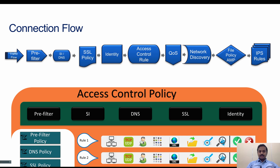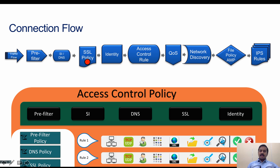If the traffic successfully crosses the security intelligence and DNS components, it moves on to the SSL policy. If the traffic matches any of the rules within the SSL policy, then the packet is subject to SSL decryption, where the data gets decrypted and the decrypted traffic is sent to all other components. If it does not match the SSL policy, then the traffic moves on to identity.